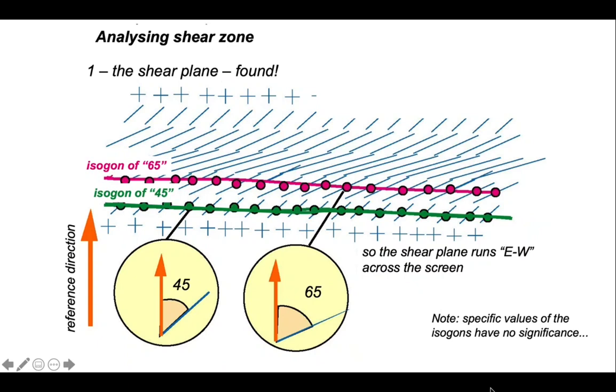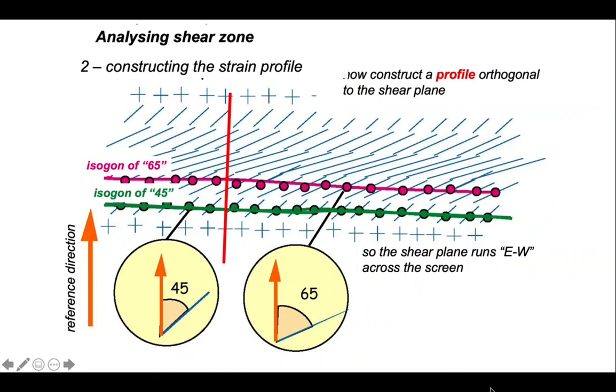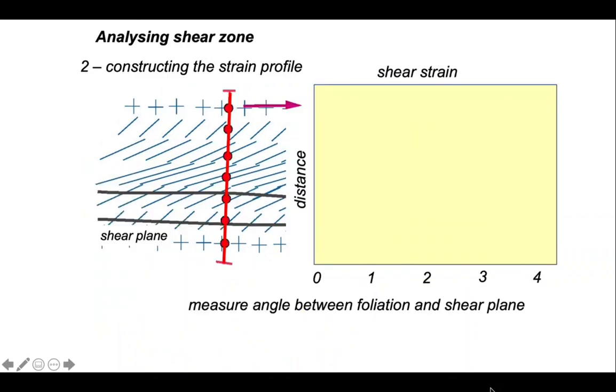So we want to construct our profile perpendicular to the shear plane. In this orientation like this. What we're going to do is, along this trend, is measure the orientation of the foliation relative to the shear plane. And we can then plot that up in a profile of shear strain against distance across the shear zone.